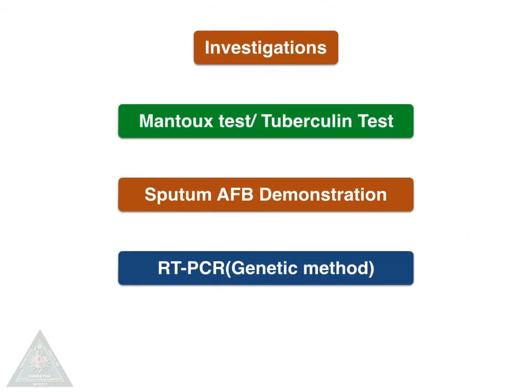Coming to the investigations of tuberculosis infection: first and foremost is the Mantoux test or tuberculin test; second is the sputum smear acid-fast bacilli demonstration through special stains; and the RT-PCR method — the genetic method — is the gold standard method for tuberculosis infection.